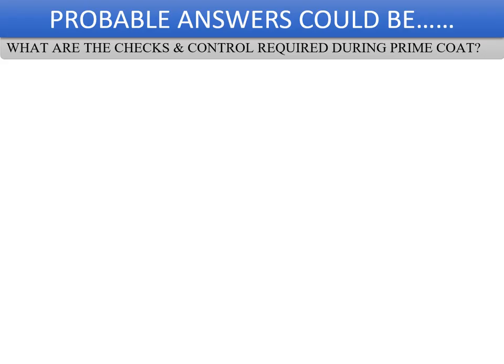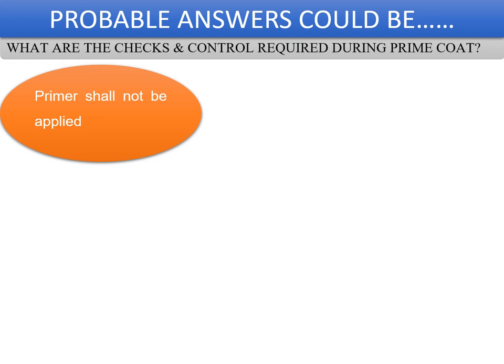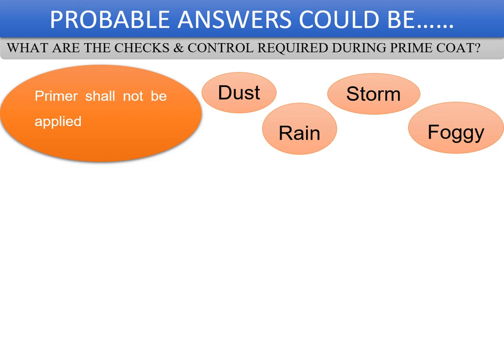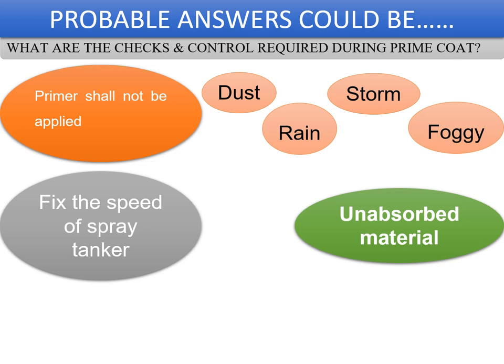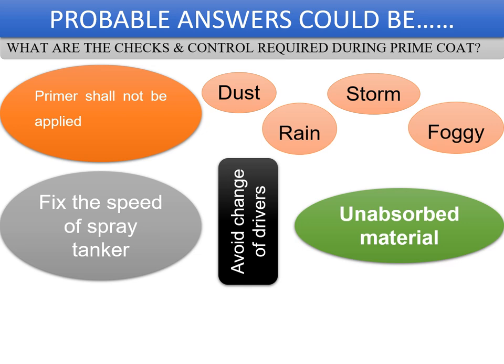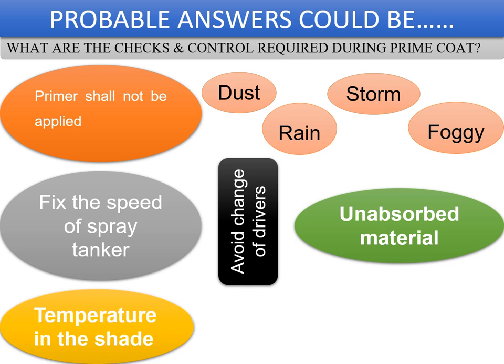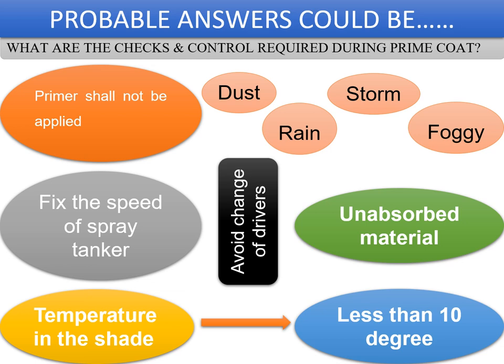The checks and controls required for priming applications are: primer shall not be applied during a dust storm or when the weather is foggy or rainy. A spray trial should be conducted to fix the speed of the spray tanker to achieve the specified rate of spray within the tolerance given in MORTH. Any unabsorbed material shall be blotted with a light application of sand or lime. The primed surface shall not be opened to traffic, the spray tanker speed should be restricted to 10–15 kmph, and when the shade temperature is less than 10°C, priming application should be stopped.